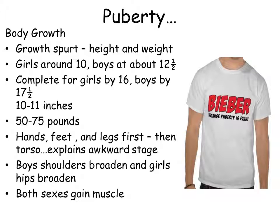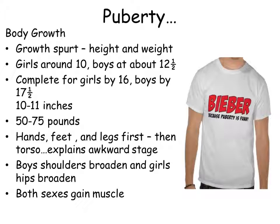Body growth in puberty: there's a height and weight growth spurt. For girls, this starts around age 10; for boys, around age 12 and a half. Girls are done by 16 — if you're a girl aged 16 or older wanting to grow another three inches, it's probably not going to happen. Boys have until about 17 and a half. During puberty you'll grow 10 to 11 inches and gain 50 to 75 pounds. Hands, feet, and legs grow first, then the torso — which explains the middle school awkward stage. Boys' shoulders broaden and girls' hips broaden, and both sexes gain muscle.